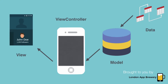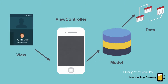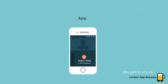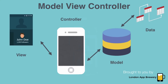This works the other way as well. Say a user taps a button that deletes a contact — say John Doe. The view will tell the view controller that the delete contact button was tapped, and the view controller will make contact with the model and ask it to remove that contact from its database.